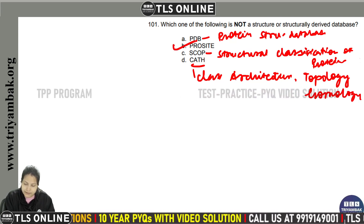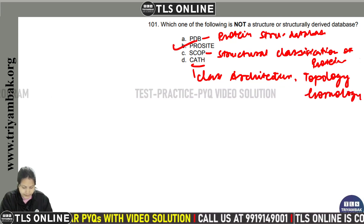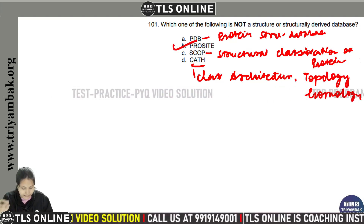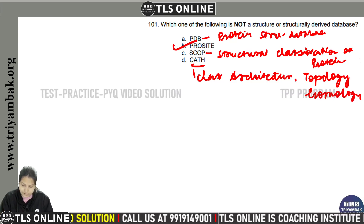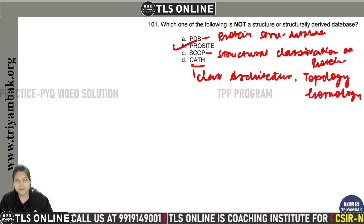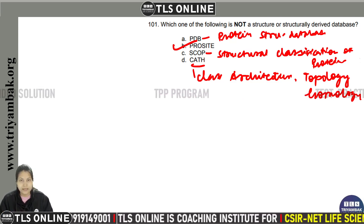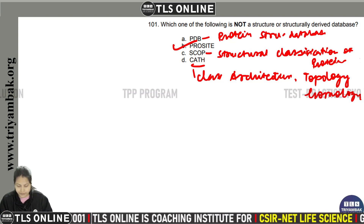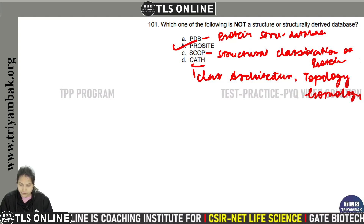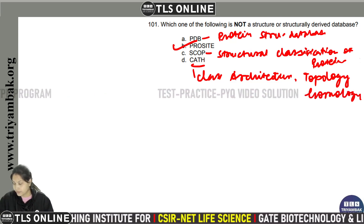Option B is correct, which is ProSite. ProSite is a sequence pattern database that uses sequence signatures to characterize protein function and sequence family. So, option B is correct — ProSite.